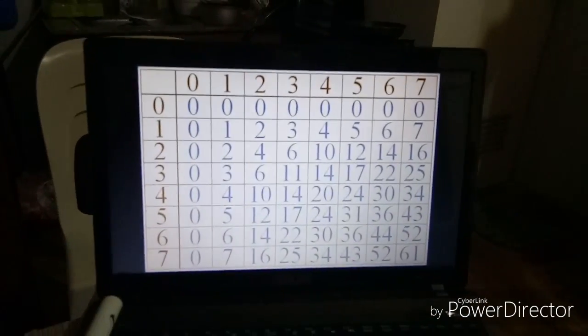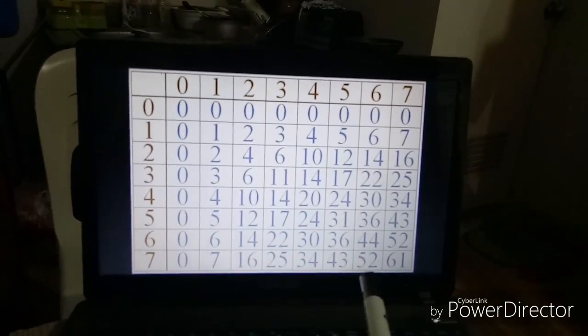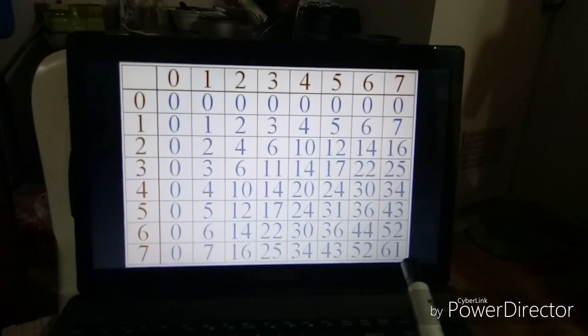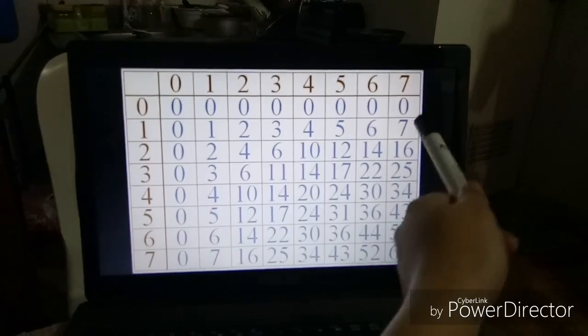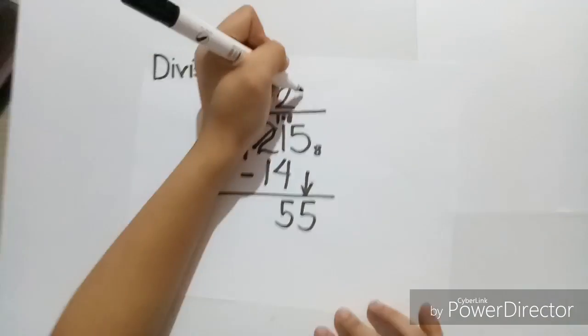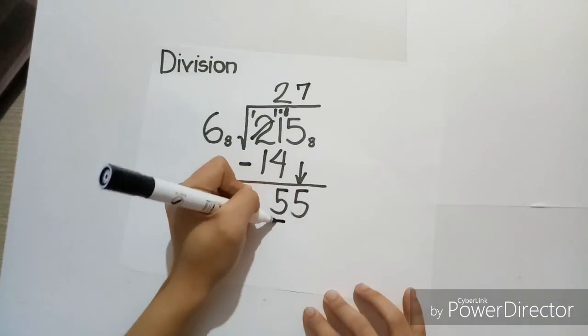And now, looking again at the table, the closest one to 55 would be 52, which is 6 times 7. So, let's use 7 and 52.